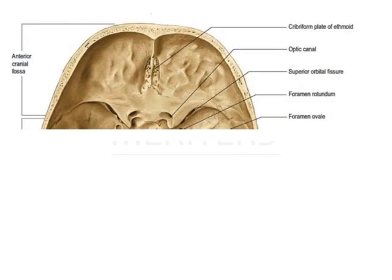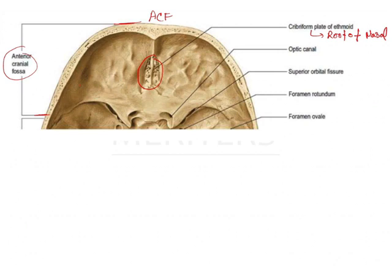Now let's see the anterior cranial fossa of the brain. In the anterior cranial fossa, the first thing you can notice is the cribriform plate of the ethmoid bone. That is going to form the roof of the nasal cavity. The second important thing about this cribriform plate is that it gives passage to the olfactory nerve axons, which go to the nose through the olfactory bulb in the brain.